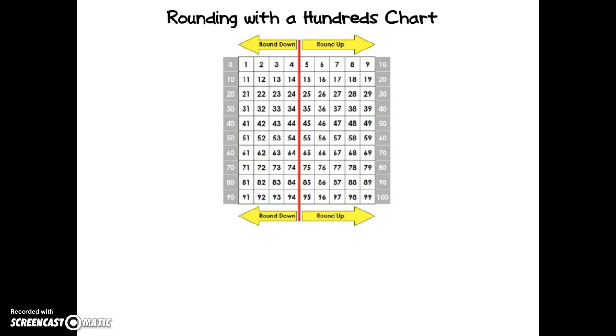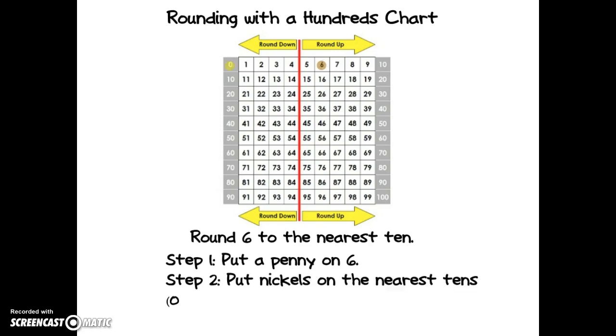As you can see, I have numbers to the left labeled round down and numbers to the right round up. First I'm going to round six to the nearest ten. I'll put a penny on six and two nickels on the nearest tens which are zero and ten. Then I decide which ten six is closest to.